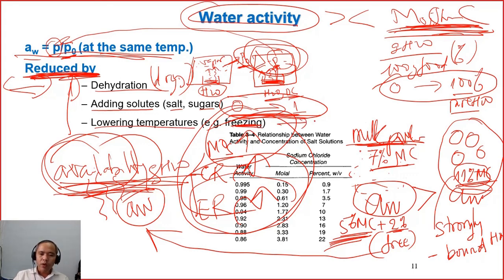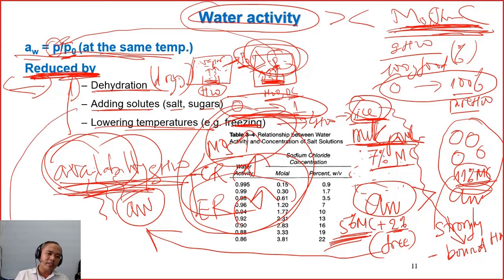When we do freezing, we convert liquid water into ice. Ice is similar like bound water. In ice, the water is crystallized into solids, linked together. They are bound together strongly. And it becomes like bound. This is why water activity of frozen food is also low. So now three measures how to do: drying, adding solutes, or freezing.